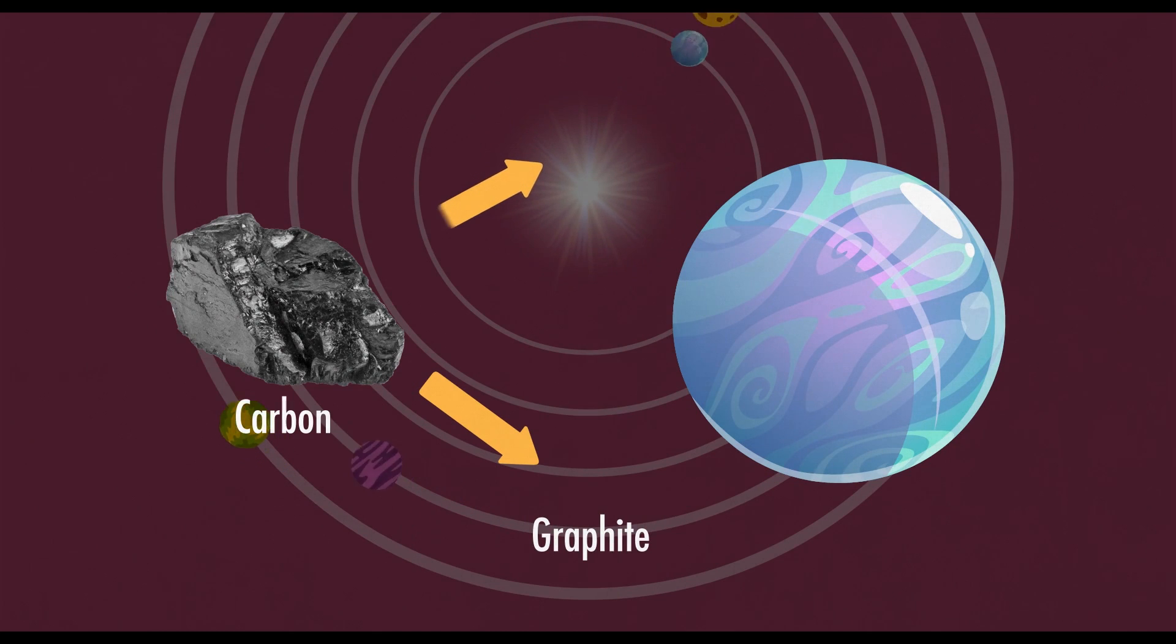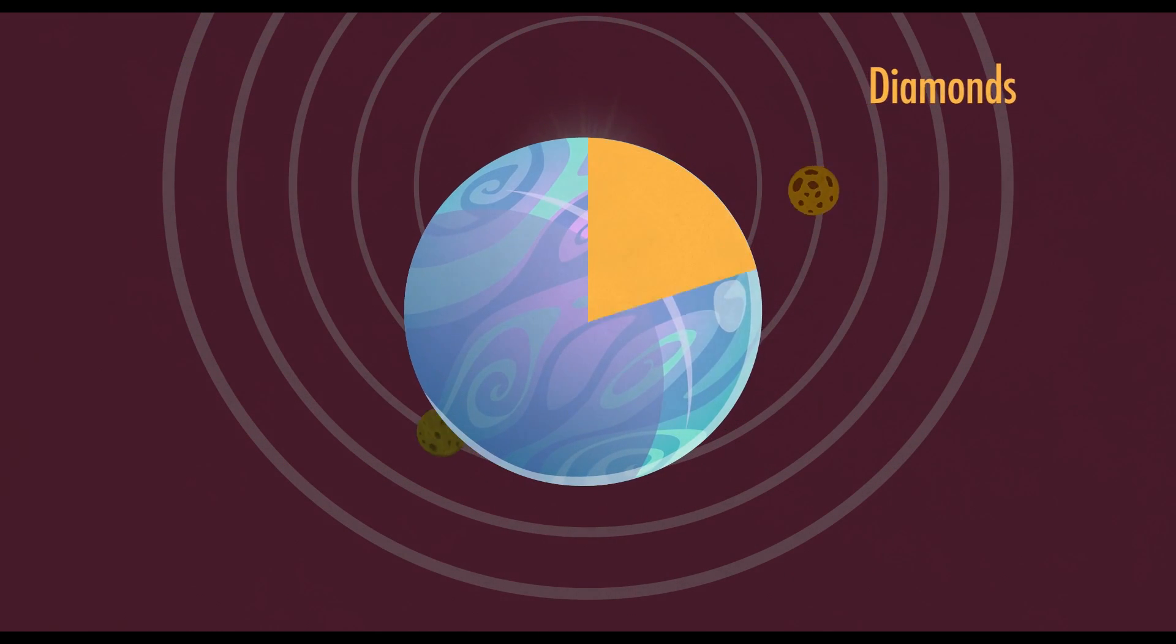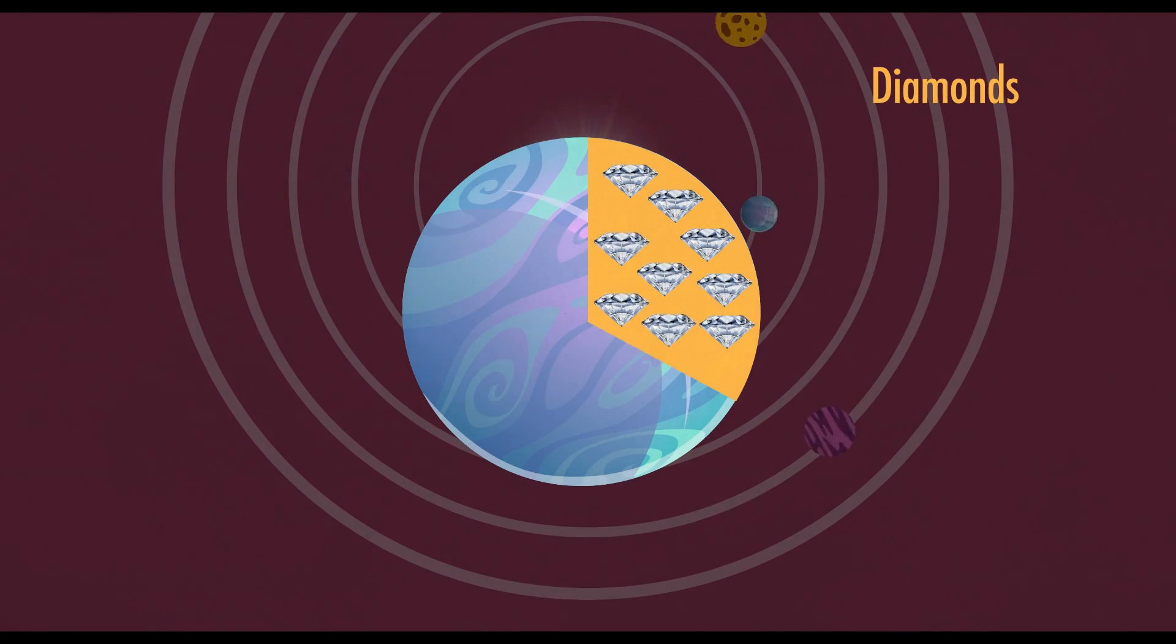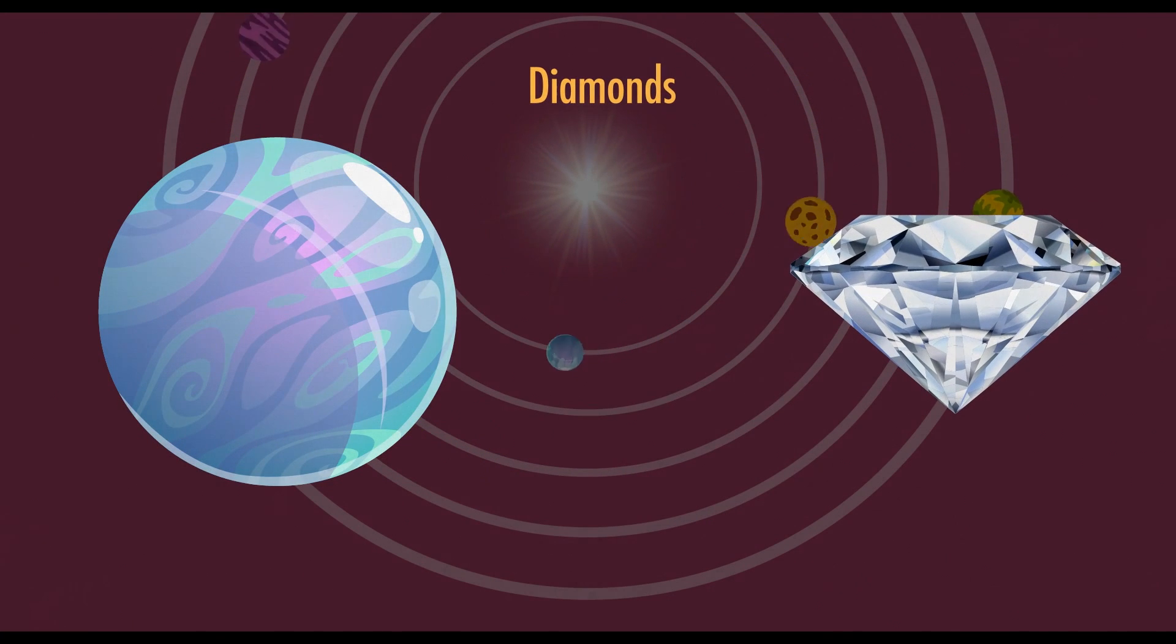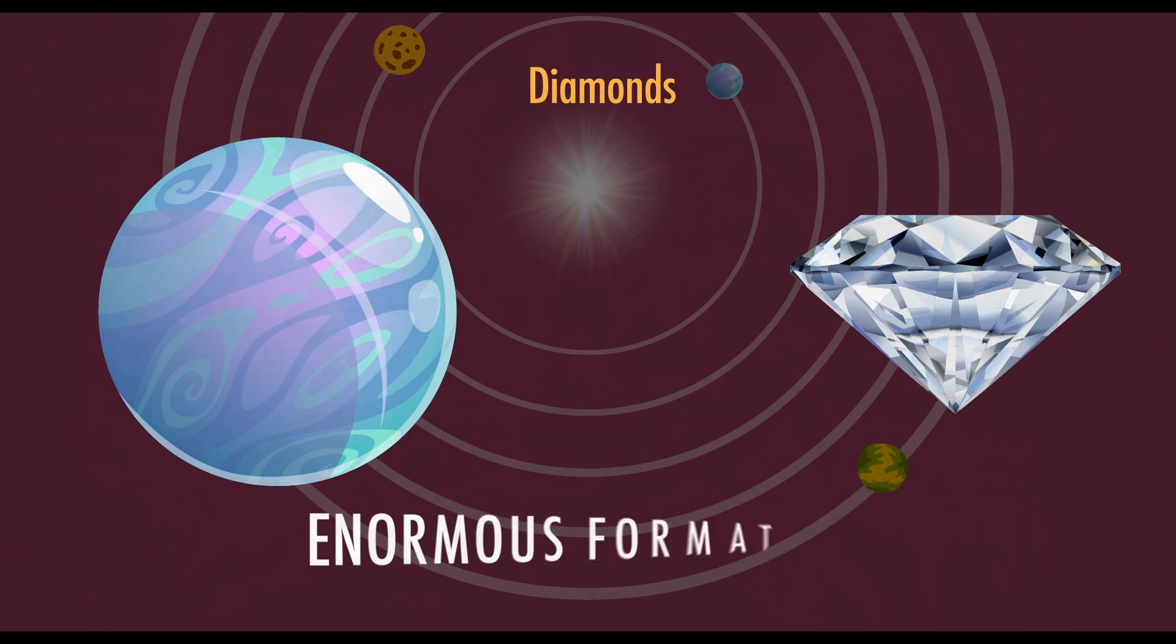Most interestingly is the presence of diamonds. It's actually believed that as much as a third of its mass could be composed of diamond. That's the equivalent of three whole Earths. The diamonds on this planet aren't like the tiny rocks that we see on Earth, but enormous formations.